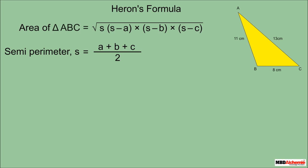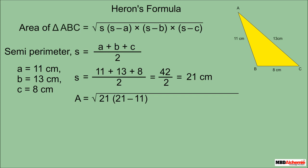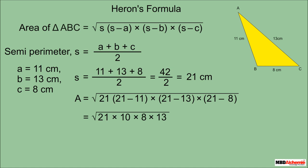Applying Heron's formula to Neil's triangle: first, find the semi-perimeter S = (11 + 13 + 8) / 2 = 21 centimeters. Then calculate: √(21 × (21−11) × (21−13) × (21−8)) = √(21 × 10 × 8 × 13) = √21840, which equals approximately 147.78 centimeters squared. This is how we can easily find the area of any scalene triangle.